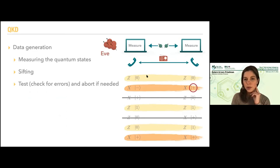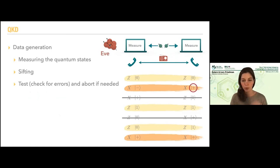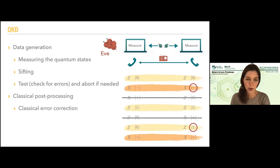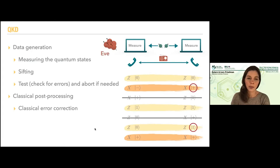Eve can listen to everything and keeps all of our quantum states — all the quantum information. Now we do classical post-processing. First, classical error correction: we want the keys to be identical. There might be additional errors in the Z basis that need to be corrected. In this step, Alice sends some classical information to Bob, Bob uses it to modify his key, and this information is available to the adversary over the public channel. Then there is privacy amplification using extractors.